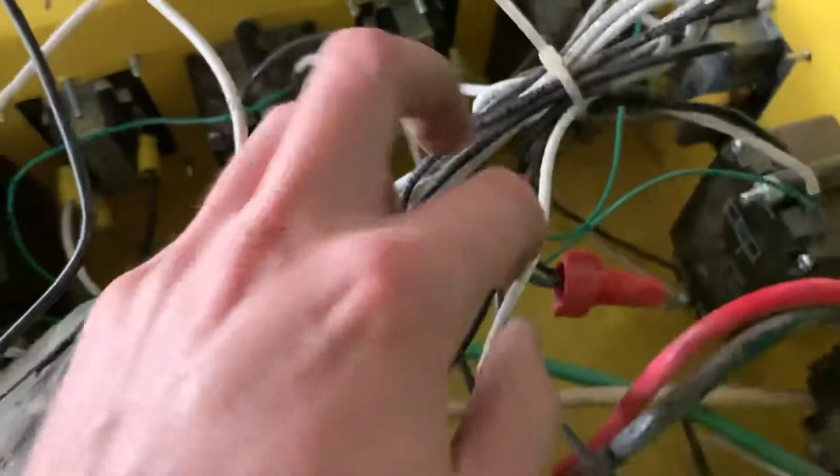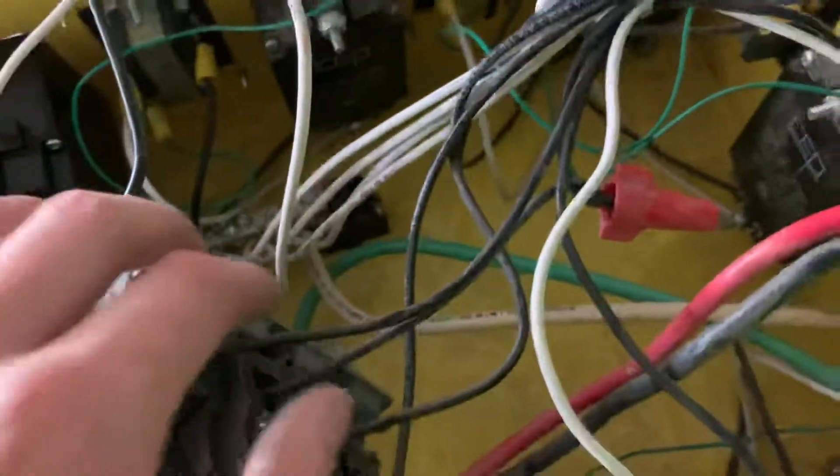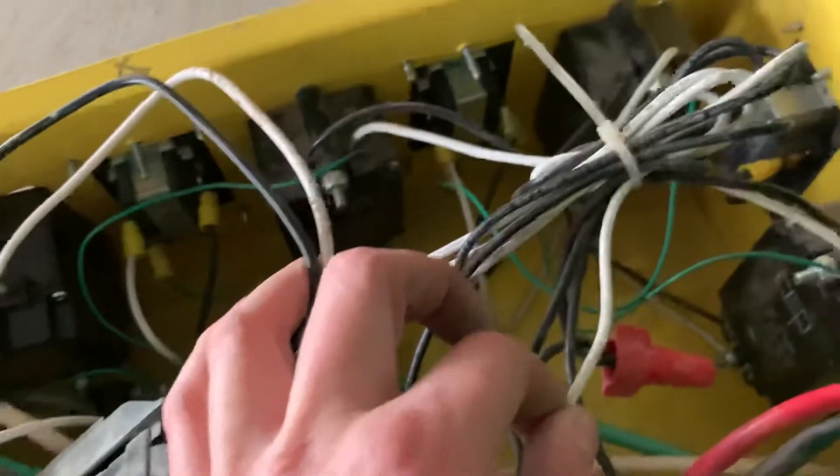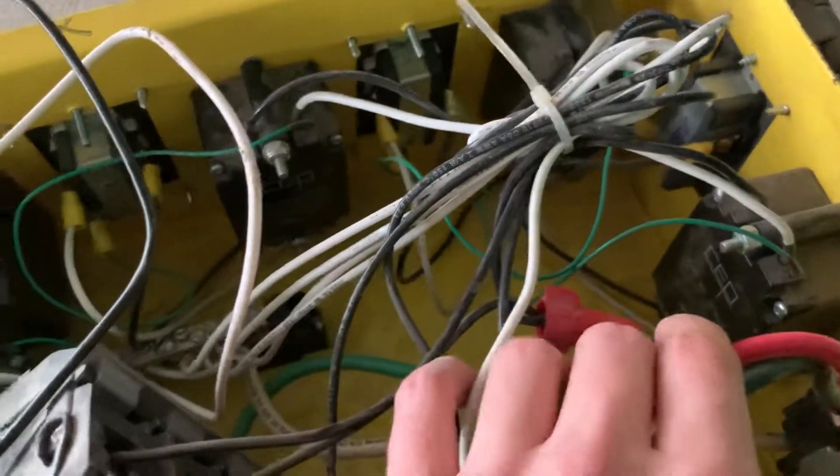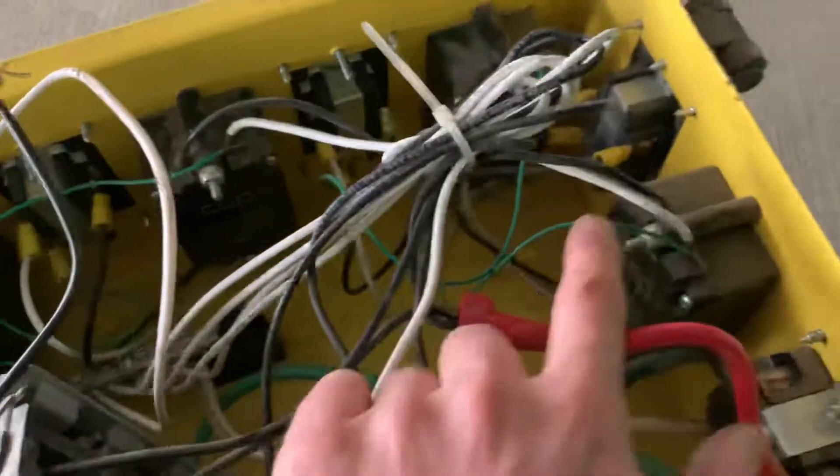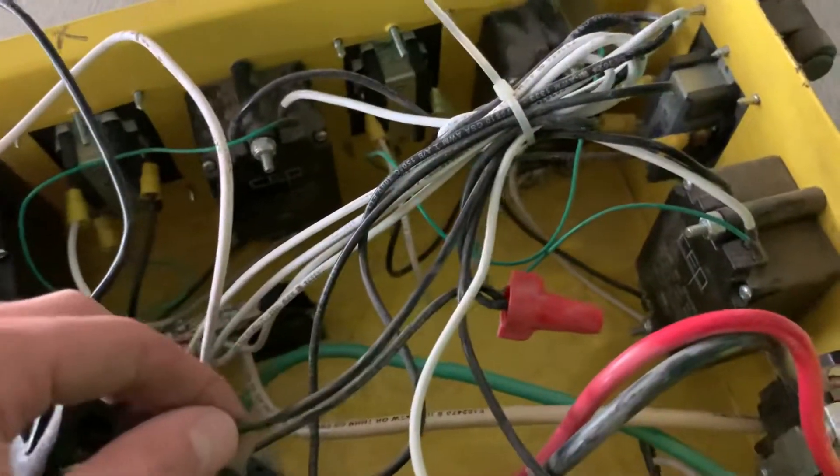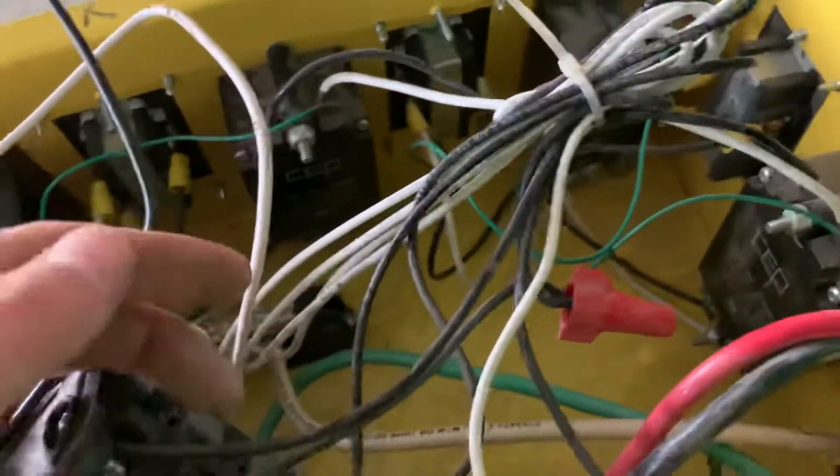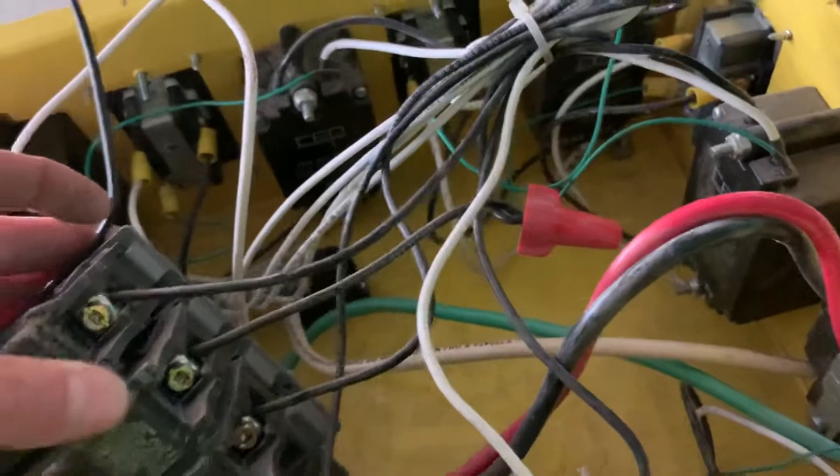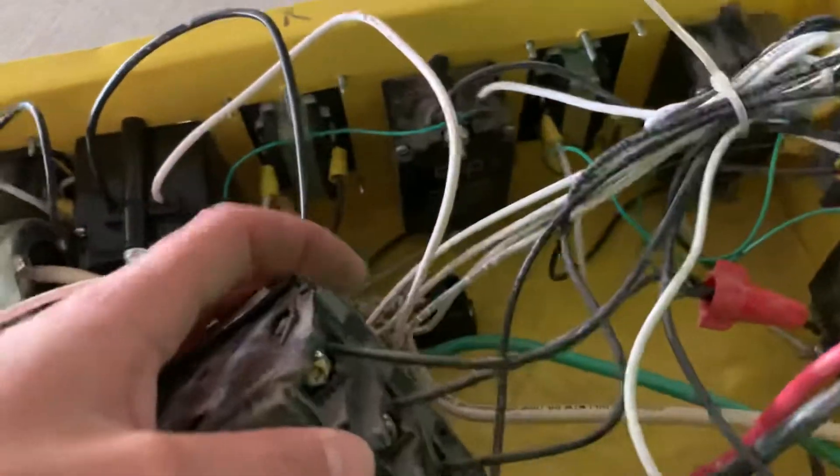It's like the whites kind of pigtail or they all just go down to the neutral bar. I can't really tell without tracing it out too hardcore. So it looks like those all go to the neutral bar, and then just the blacks go to the plug or the breaker. I'm not sure how this is GFCI protected here.